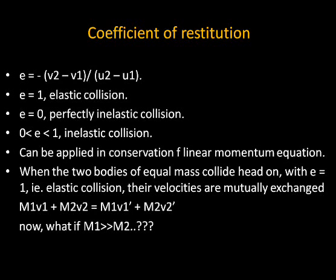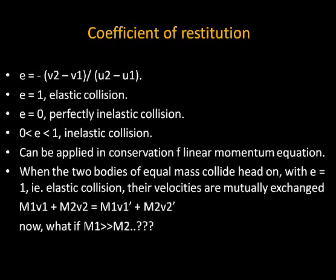The coefficient of restitution comes into picture because in an elastic collision there is a perfect transfer of energy, but in other types of collision the objects get deformed. For example, when hitting a ball with a bat, it is not an elastic collision because you can see deformation happening in both the ball and the bat.